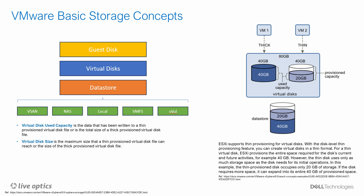Thick provisioned virtual disk files are created at a static size representing the total capacity of the virtual disk. All virtual disk files have two basic properties: virtual disk used capacity is the data written to a thin provisioned virtual disk, or the total size of a thick provisioned virtual disk; and virtual disk size is the maximum size a thin provisioned virtual disk can reach, or the size of a thick provisioned virtual disk. For a thick provisioned virtual disk, the used and size properties are the same value.